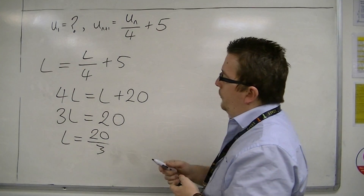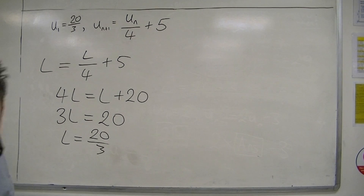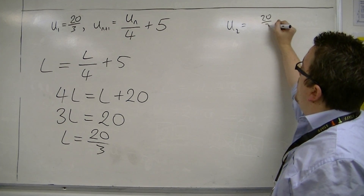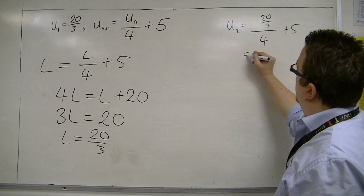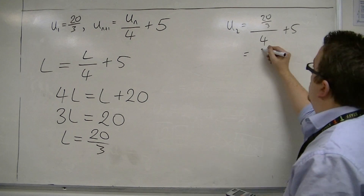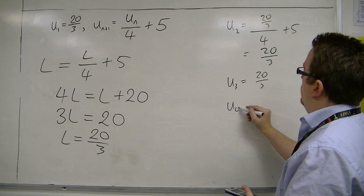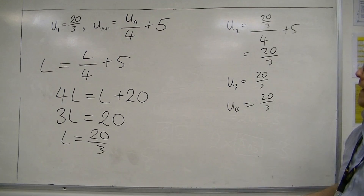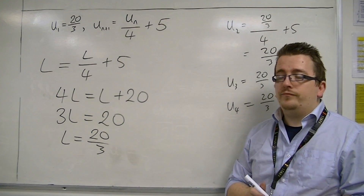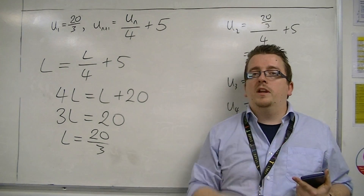So if I now start my sequence with 20/3, let's see what happens. u1 is 20/3, so u2 is 20/3 divided by 4 plus 5, which equals 20/3. So u3 will be exactly the same, and so will u4. I have found a starting number that will generate a constant sequence. Now what we'll find is that some of these sequences will have a limit, and that's what we're going to be looking at in the next video.